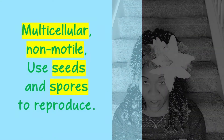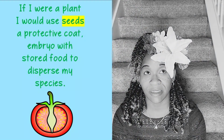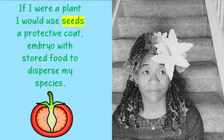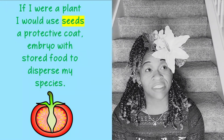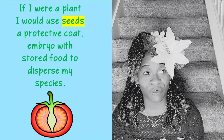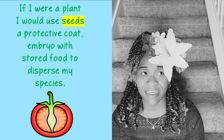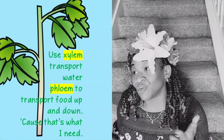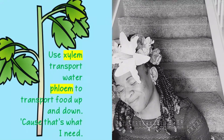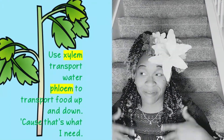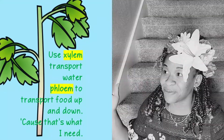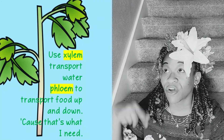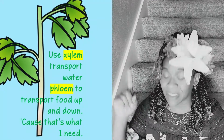If I were a plant, I would use seeds — a protective coat around an embryo to store food and disperse my species. I could be vascular and have roots, stems, and leaves. Use xylem to transport water, phloem to transport food up and down.